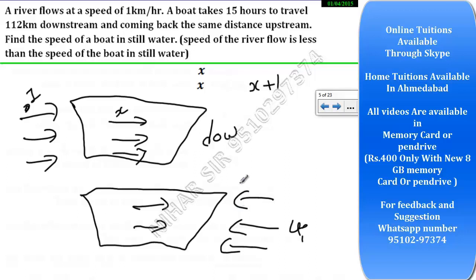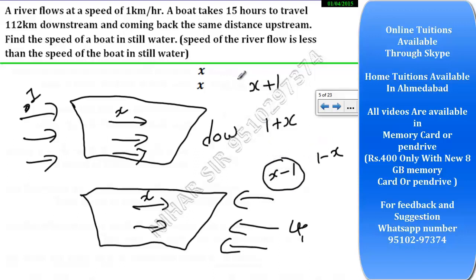The water speed is 1 and the boat speed is x, so upstream it will be x minus 1. Now can 1 plus x happen? Yes. Can 1 minus x happen? No — why not? Because the speed of the river flow is always less than the boat speed. If the water speed were more than the boat speed, then the boat would not be able to go ahead.